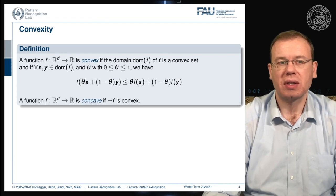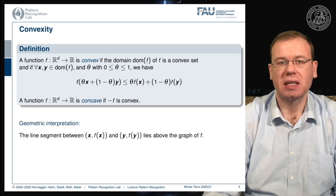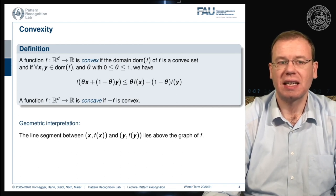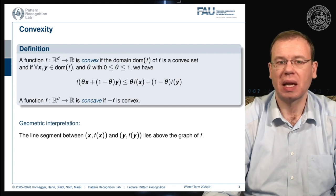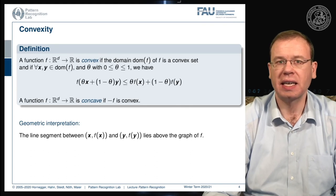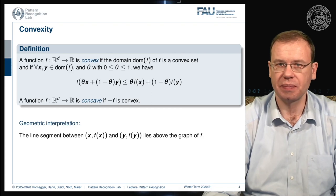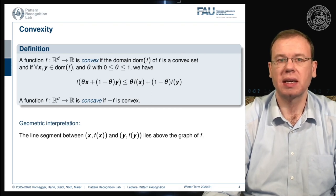You can also see that a function is concave if minus f is convex. In a geometric interpretation, we can say that the line segment connecting (x, f(x)) and (y, f(y)) lies above the graph of f. If you can connect any two points on the graph with a line and this line lies above the graph of f, you have a convex function. A very typical example is a parabola.